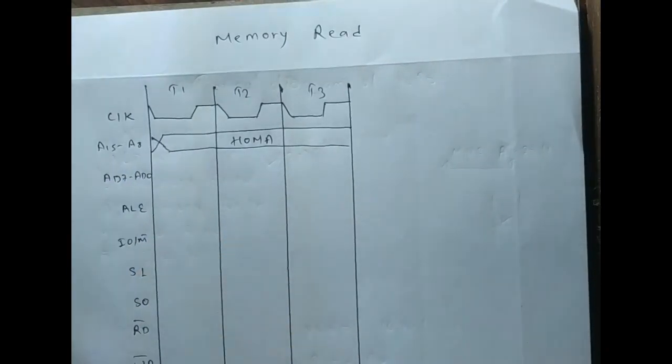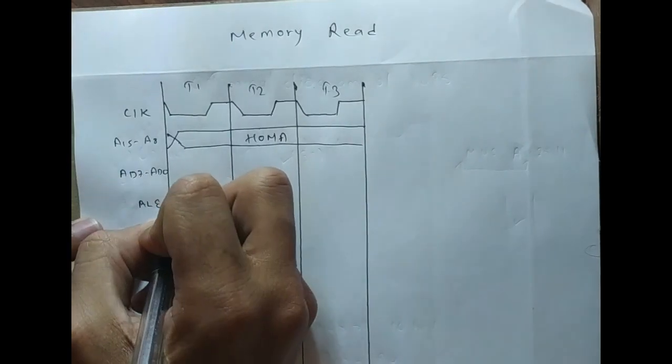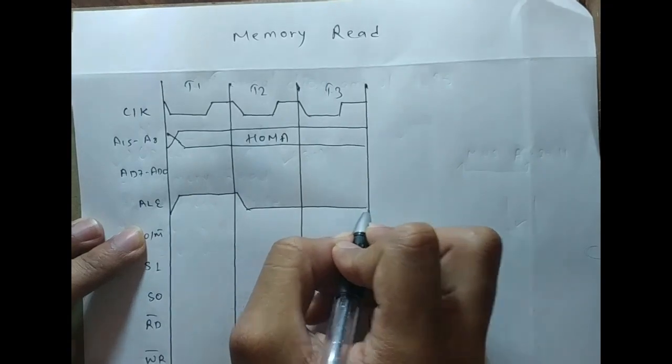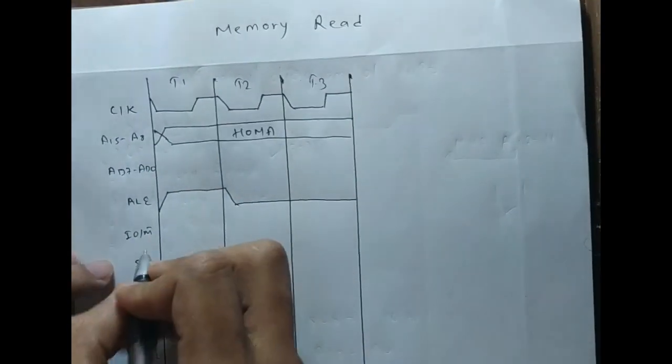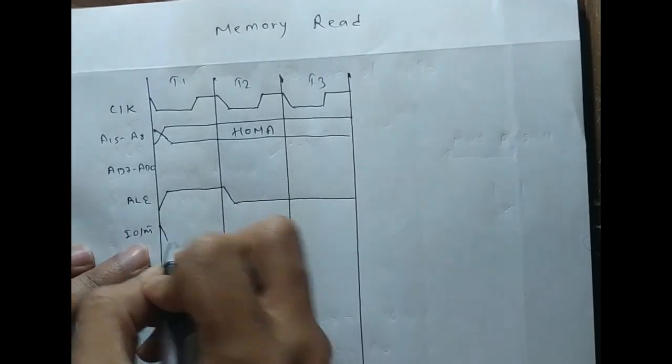As I have already said, you can make ALE high in the first state and make it low in the remaining states. Memory read is a memory operation, so we can make IO/M low indicating a memory operation.